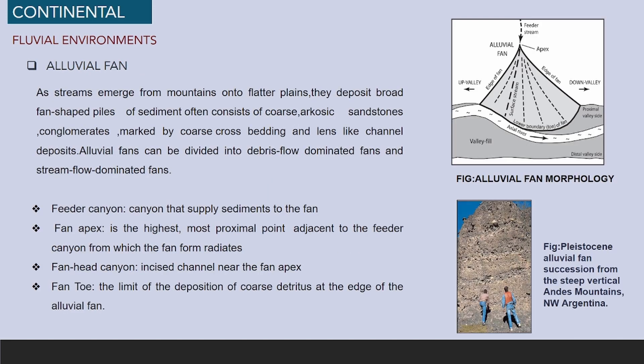One example of fluvial environment is the alluvial fan. As streams emerge from mountains onto flatter plains, they deposit broad fan-shaped piles of sediment, often consisting of coarse arkosic sandstones, conglomerates marked by coarse crossbedding and lens-like channel deposits. Alluvial fans can be divided into debris-flow-dominated fans and stream-flow-dominated fans. Feeder Canyon, Fan Apex, Fan Head Canyon and Fan are part of the morphology of an alluvial fan.